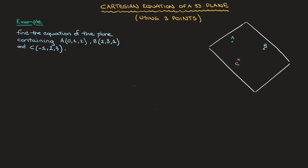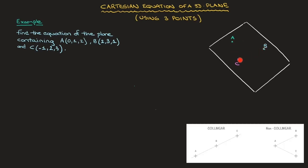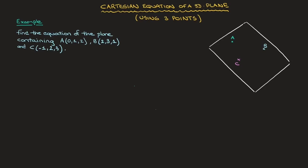Before starting, I should point out that this can only be done provided that the three points we're given don't lie in a straight line. In other words, the three points that we're given cannot be collinear. The method that we learn here can be summarized in three steps.